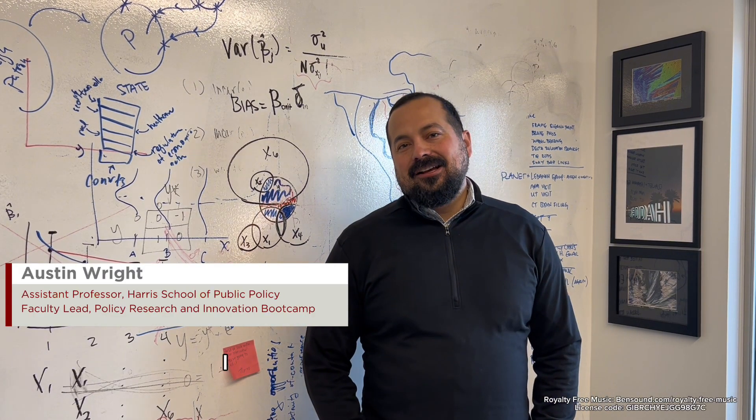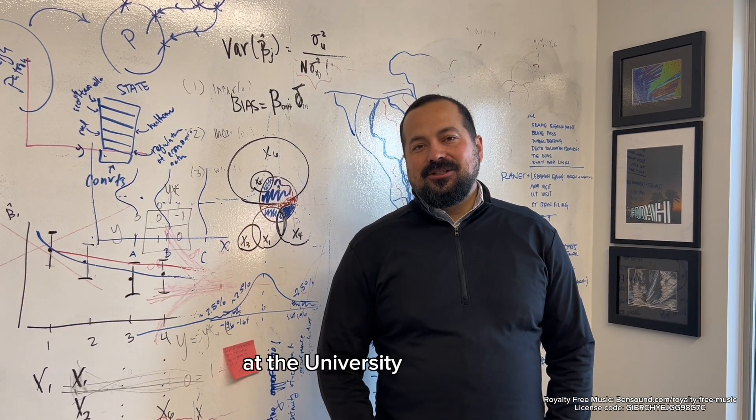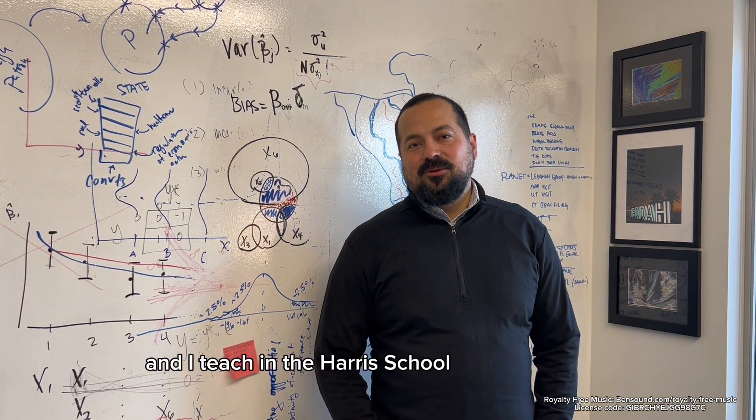So my name is Austin Wright. I am an assistant professor here at the University of Chicago and I teach in the Harris School of Public Policy.